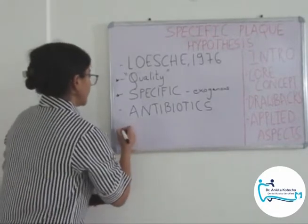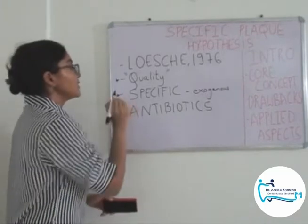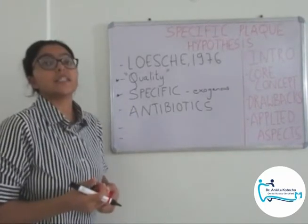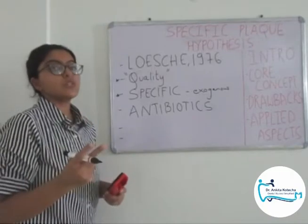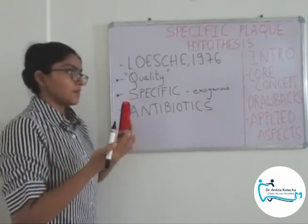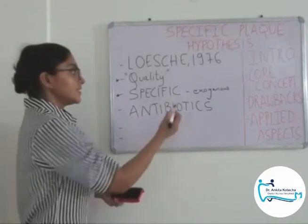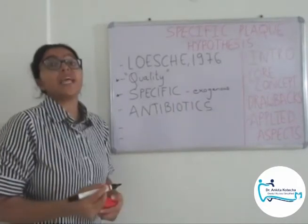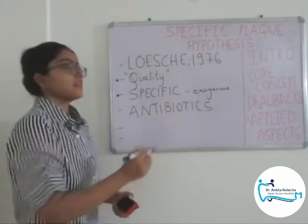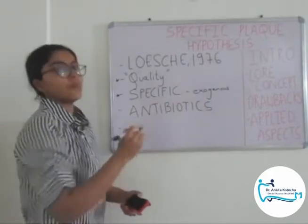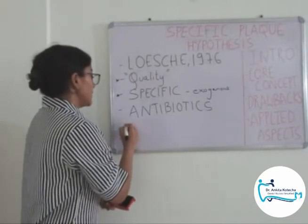Coming to drawbacks. Mainly there were two drawbacks. Going back to the point of specific microorganisms being exogenous in nature — there can be two scenarios: either these specific microorganisms are exogenous or endogenous. But the hypothesis assumed them to be exogenous. If they are exogenous, then these antibiotics should kill them and result in total elimination ideally. But that was not the case.